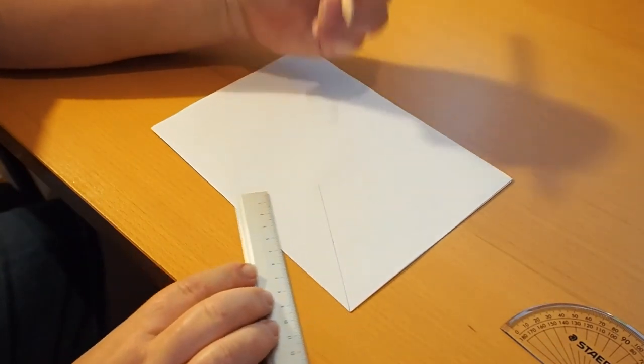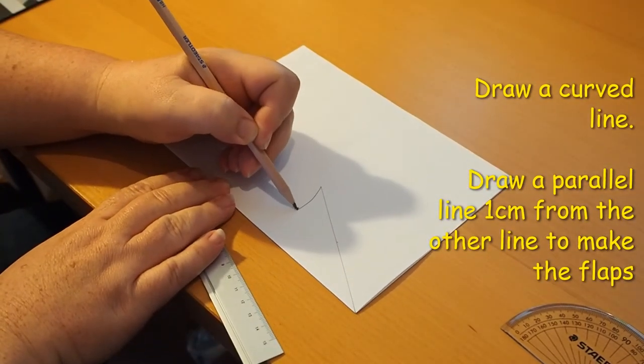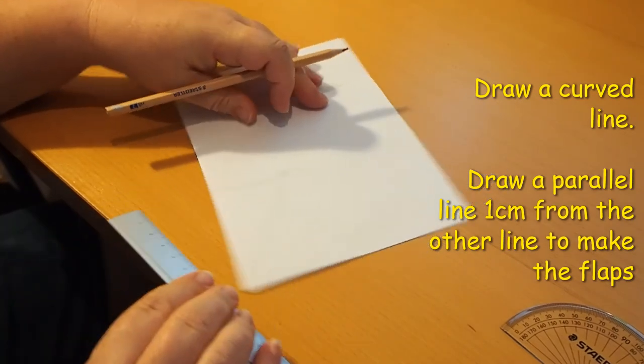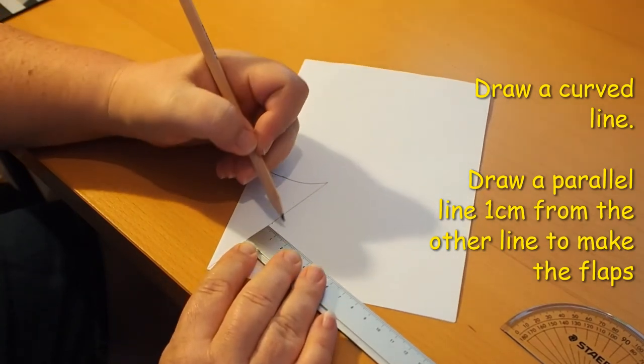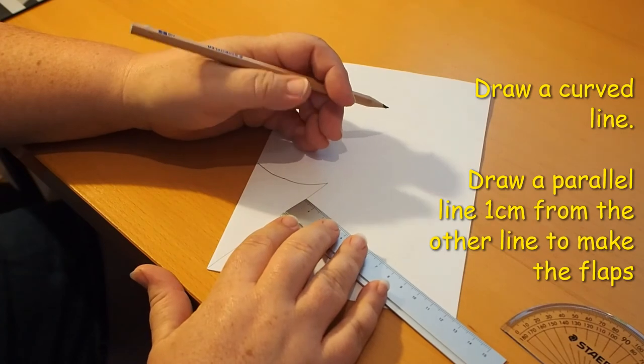Then draw a curved line from the end of the 10 centimeter line to the fold. Draw a parallel line about 1 centimeter from the 10 centimeter line. This will make the flaps to attach the gnomon to the base.